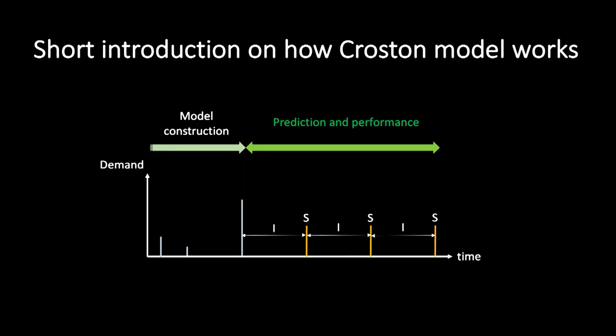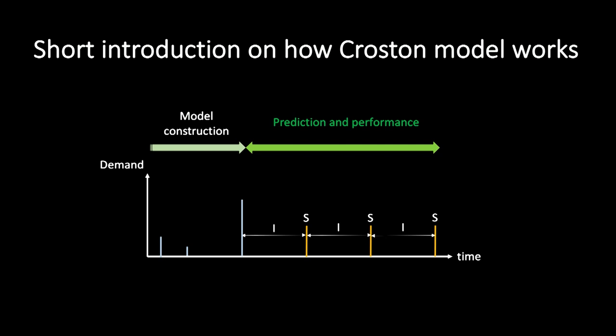Very briefly, here is how this model works. It does two independent predictions: one, S, for the value of each stock consumption, and another, I, for the interval between two consecutive stock consumptions. The prediction of the model is an arbitration between the last prediction and the most recent observation. Thanks to this exponential smoothing principle, historical data receive variable weights according to their age in time, and these weights are represented in the model with two smoothing parameters.